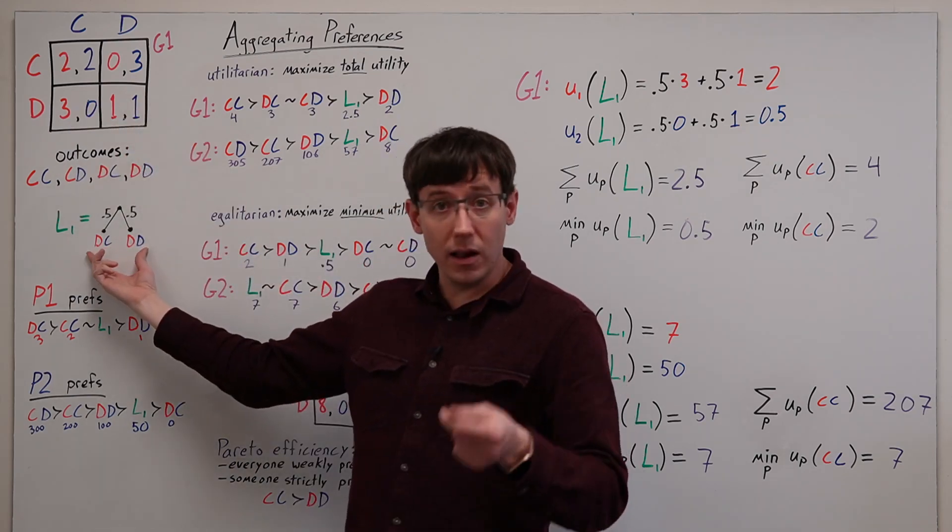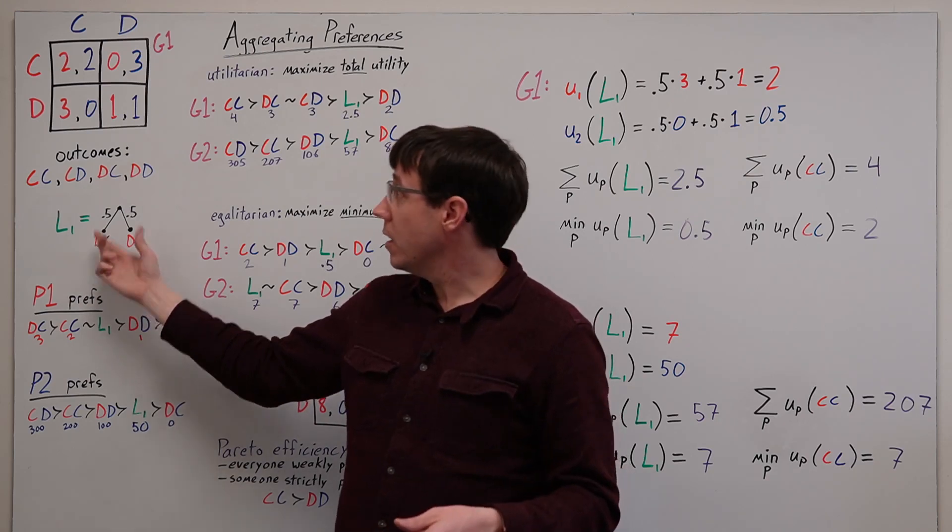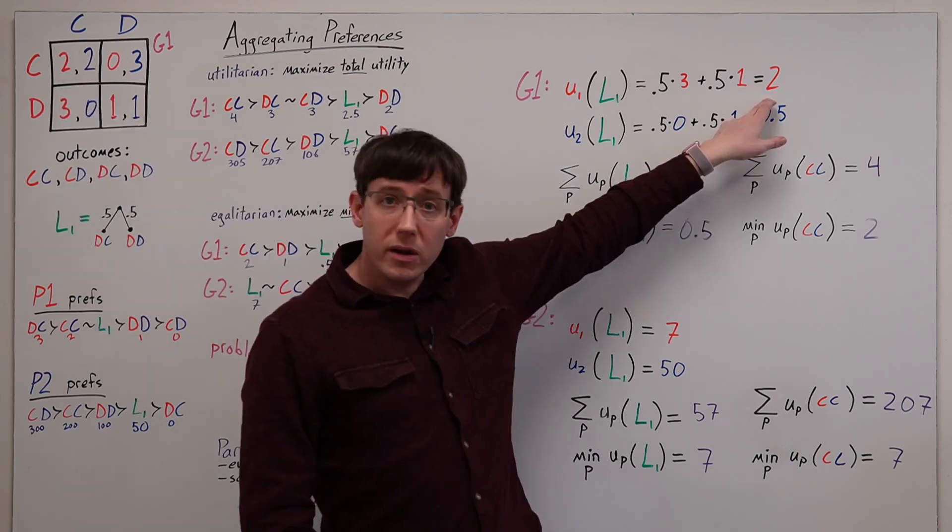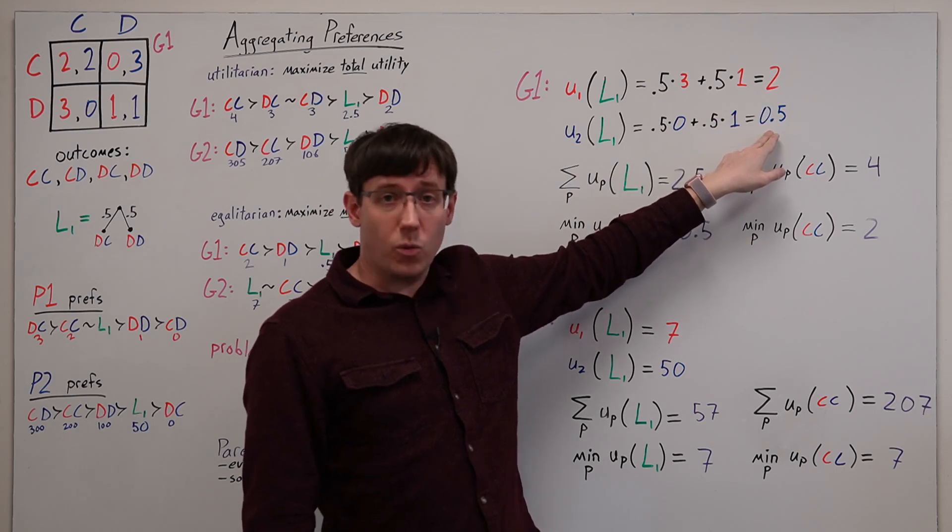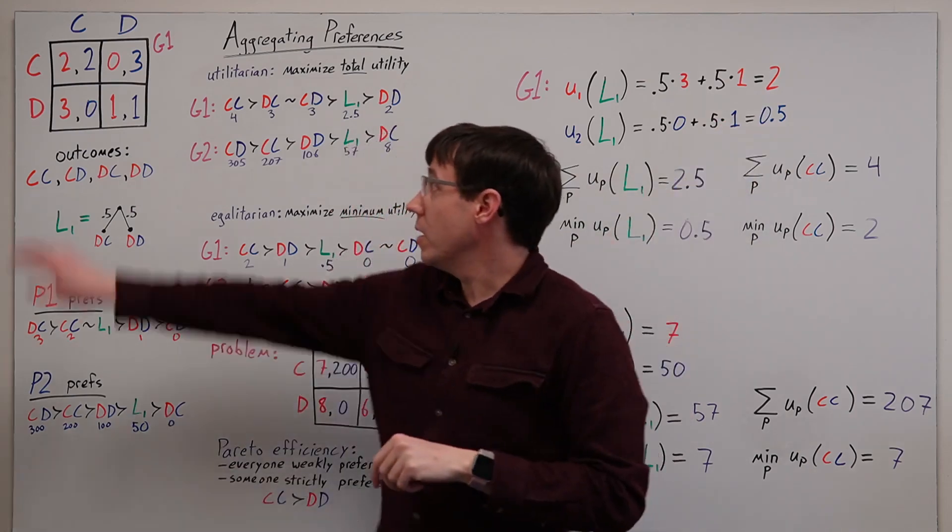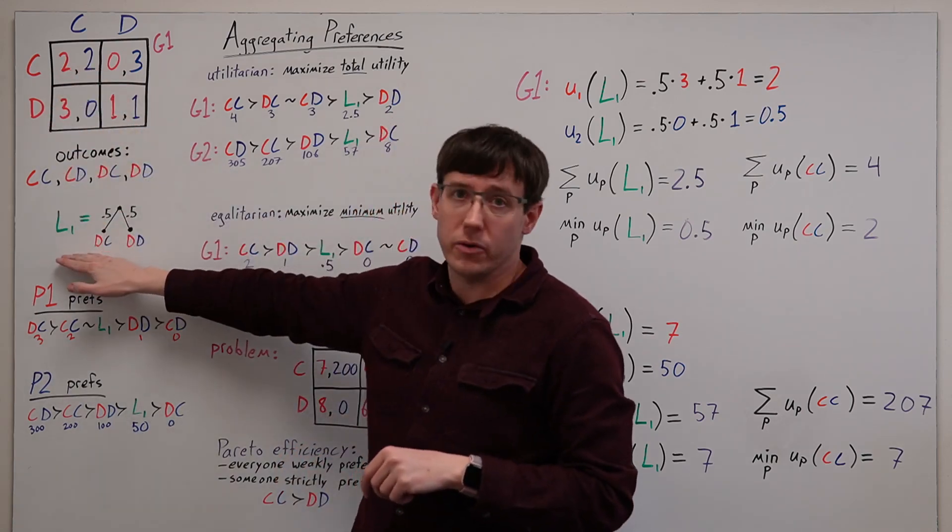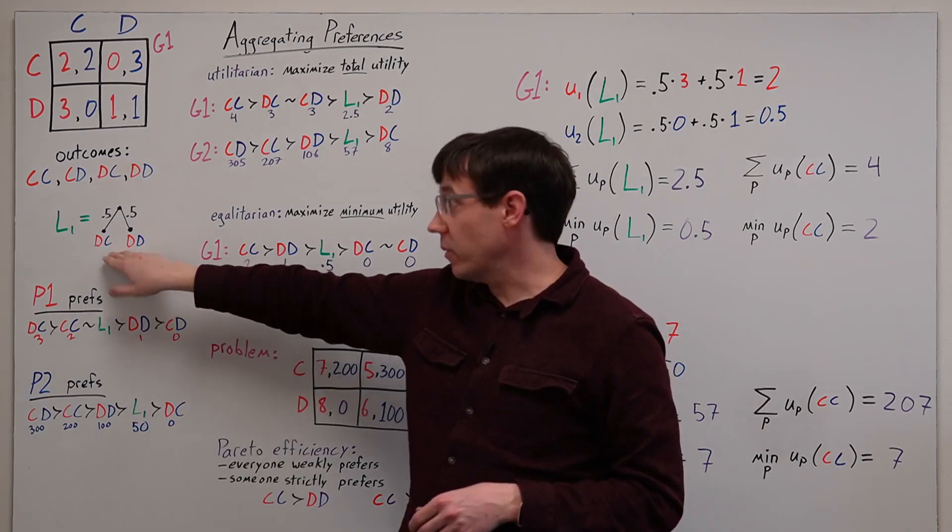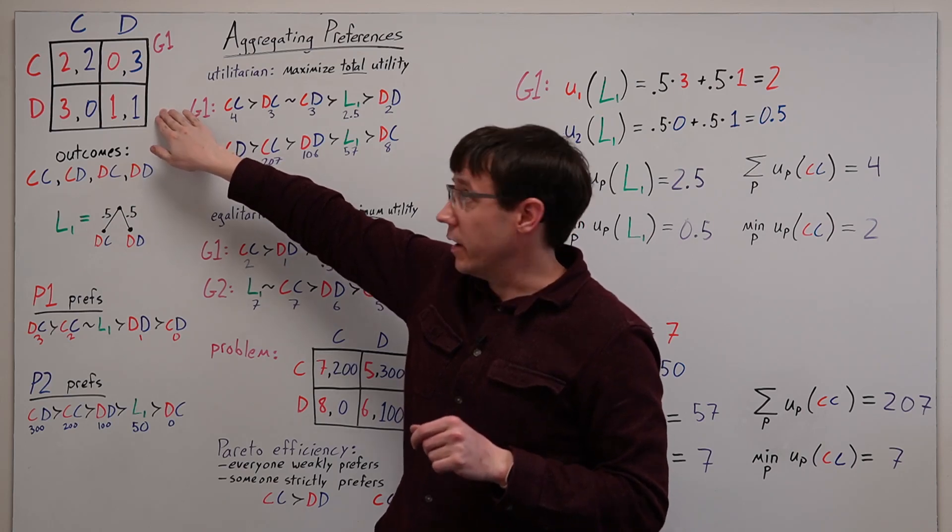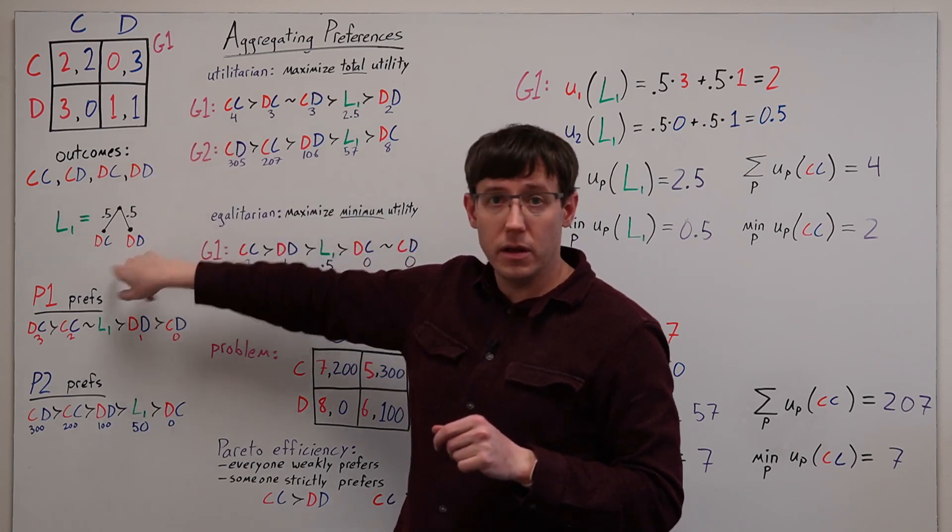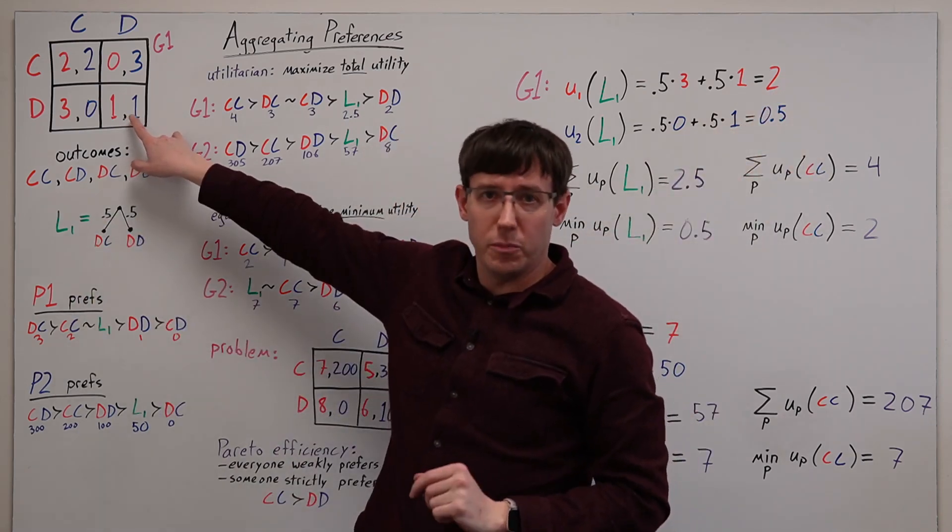If we add the lottery L1 to our comparison, then relative to the both cooperate outcome, player 1 is exactly as well off and player 2 is worse off. So we can say that both cooperate is Pareto dominant over the lottery. But if we compare the lottery to both defect, now the players are going to disagree. Player 1 prefers the lottery, getting them a payoff of 2, but player 2 would prefer to get a payoff of 1 from both defect.